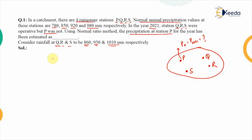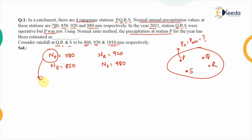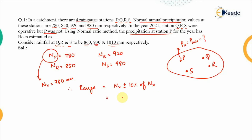The normal rainfall for station P is 780 mm, for station Q it is 850 mm, for station R it is 920 mm, and for station S it is 980 mm. Since station P is the missing station, the NX value equals 780 millimeters.